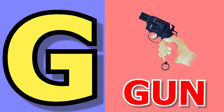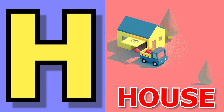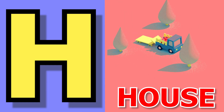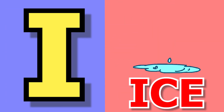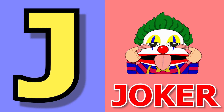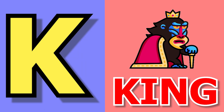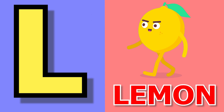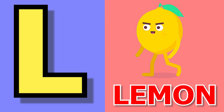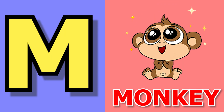G for gun, H for house, I for ice, J for joker, K for king, L for lemon.